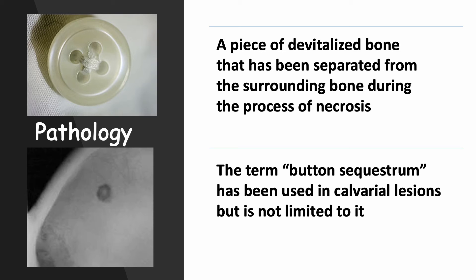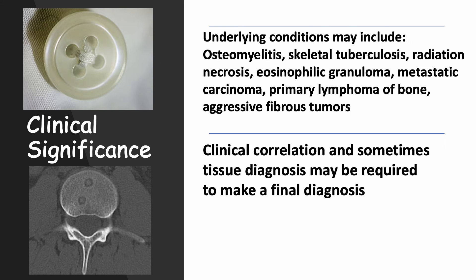The term button sequestrum has also been used to describe calvarial lesions, but is not limited to them. Underlying conditions for this appearance may include osteomyelitis, skeletal tuberculosis, radiation necrosis, eosinophilic granuloma, metastatic carcinoma, primary lymphoma of the bone, or aggressive fibrous tumors. Clinical correlation and sometimes tissue diagnosis may be required to make a final diagnosis.